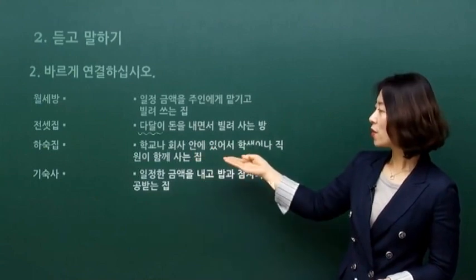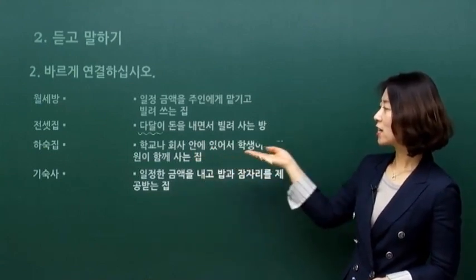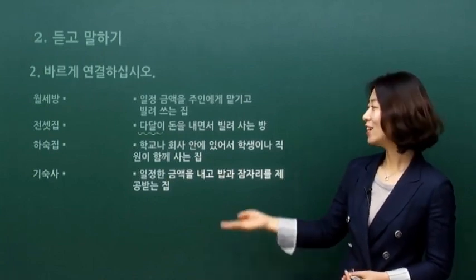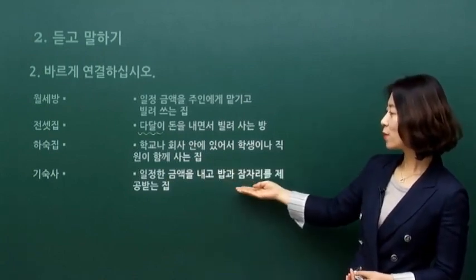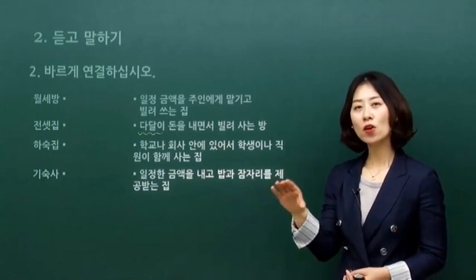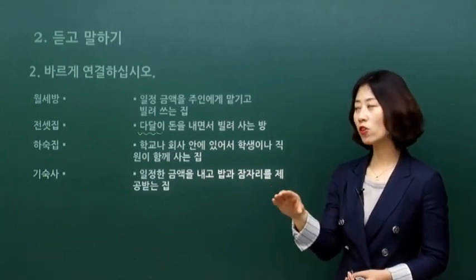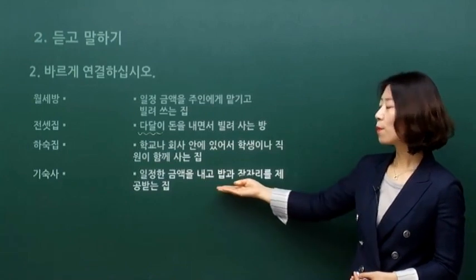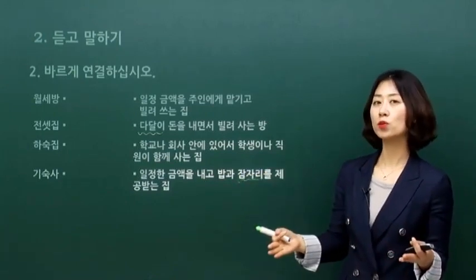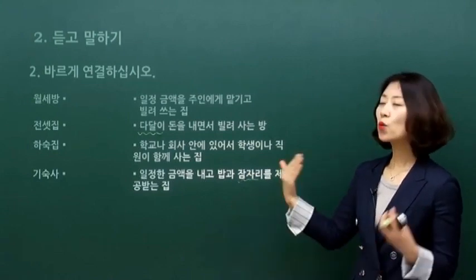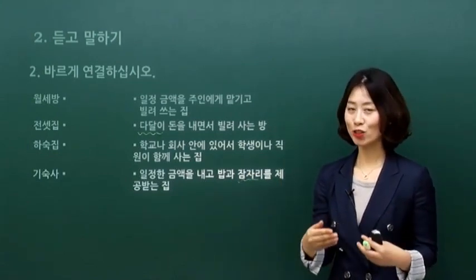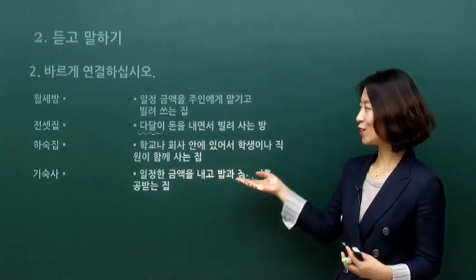세 번째, 학교나 회사 안에 있어서 학생이나 직원이 함께 사는 곳, 이건 알 수 있을 것 같아요. 네 번째, 일정한 금액, 한 달에 40만 원, 50만 원, 60만 원 같은 정해진 금액을 내고 밥과 잠자리를 제공받는 곳. 잠자리는 잠을 자는 장소를 말하는데, 아까 식사 제공하는 것들 기억하시죠? 이것도 알 수 있을 것 같아요.